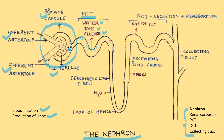The loop of Henle consists of a descending limb, a thin segment, and an ascending limb. It plays a crucial role in establishing the concentration gradient within the kidney, which is essential for concentrating urine. The descending limb is permeable to water but not to ions, allowing water to passively diffuse out of the tubule.